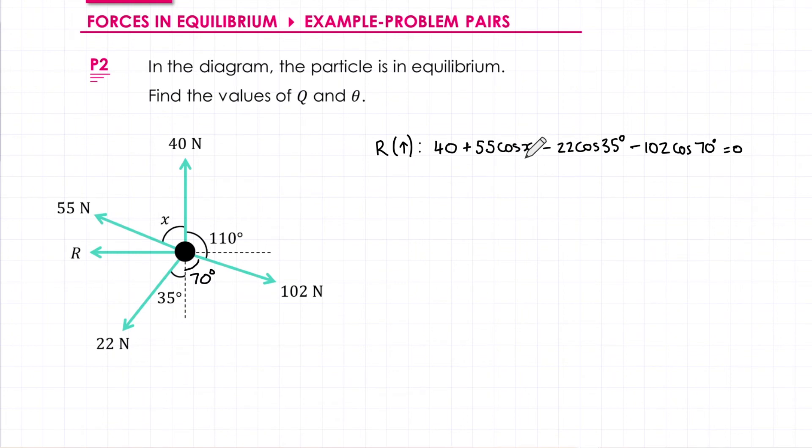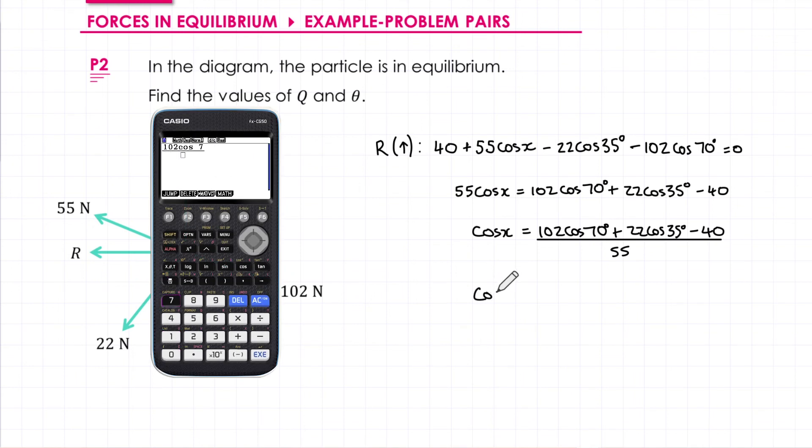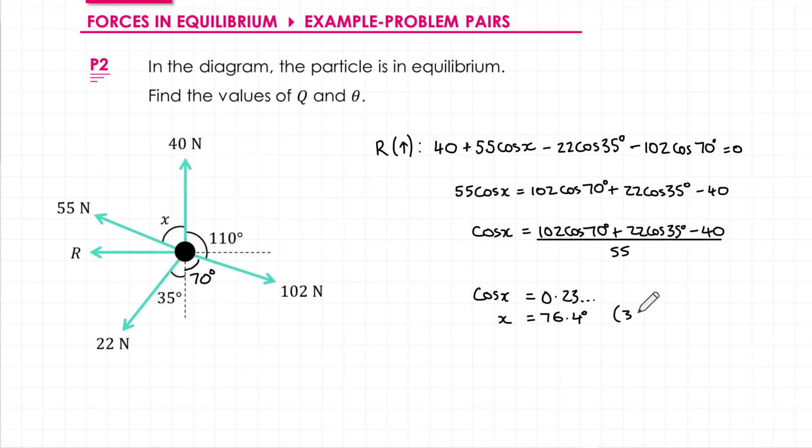And now we just need to rearrange to find X. So I'm going to leave the 55 cos X on its own and move everything to the other side. And then divide through by 55. And if you put that into your calculator, you get 0.23 and so on. And then do an inverse cos of that gives you 76.4 degrees. However again we're going to be using this answer to find the value of R. So make sure you store it in your calculator.